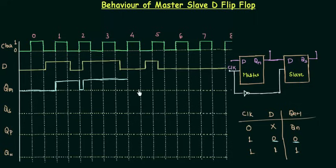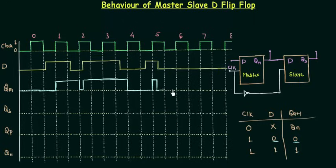We are changing the input D signal during the high clock pulse. So QM will be low initially, then go high again till the next high pulse. When the clock is high again D is high, so QM remains high. For the next high pulse D is low so QM goes low. Finally, the input signal is changed during the clock — it is high initially then goes low, so QM follows this pattern.